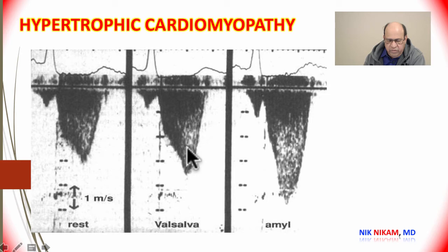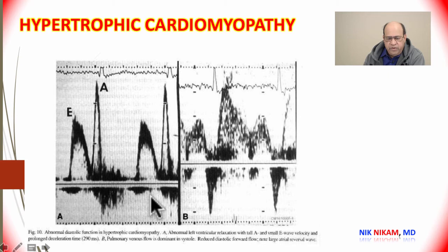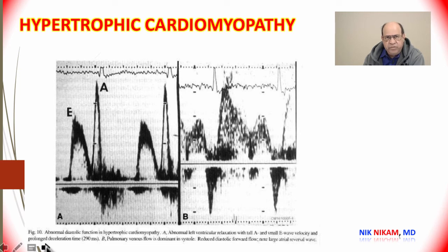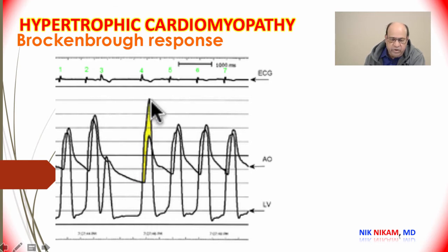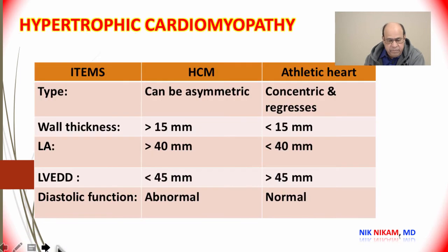Here is the effect of Valsalva on pulse wave Doppler: at resting conditions there is minimal increase, but with amyl nitrate the velocity significantly increases. Pulse wave Doppler across the mitral valve shows a significant A-wave prominence, suggesting diastolic dysfunction of the left ventricle. In the cardiac catheterization lab, following a premature ventricular beat, the increased diastolic filling period produces a significantly increased gradient — this is known as the Brockenbrough response.